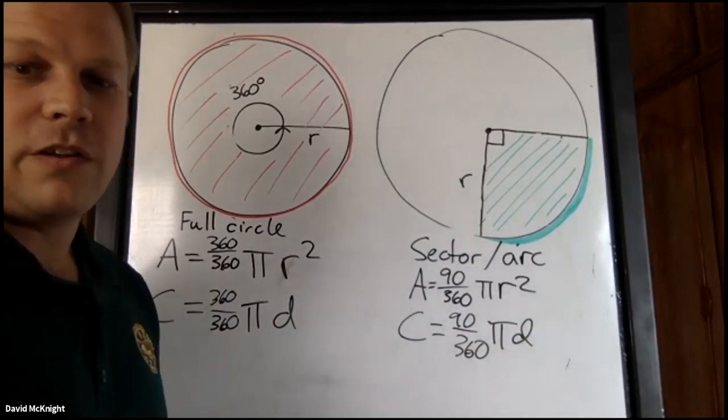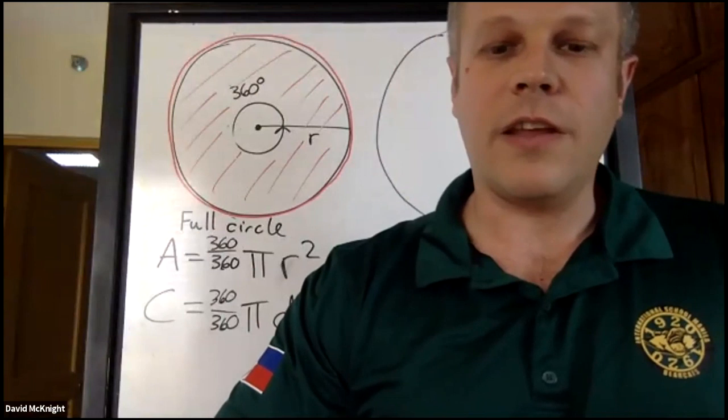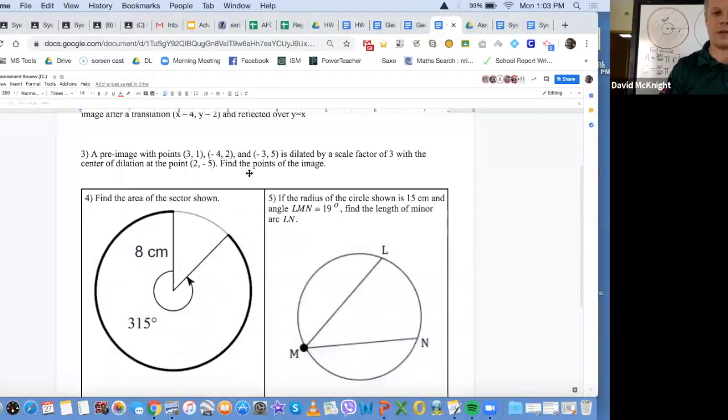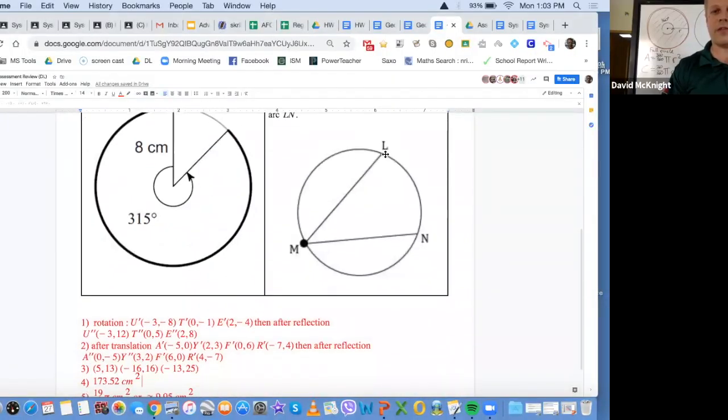I will just explain really quickly that there is this example here. You're trying to find this arc length here. And we don't have that angle of the sector. We don't have the central angle.